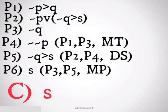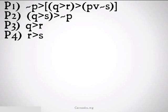Finally, we're going to take a look at this last problem, which was a little bit tougher. We had not p implies q implies r implies p or not s. Premise 2, we had q implies s implies not p. Premise 3 was q implies r and premise 4 was r implies s. The conclusion we're trying to reach is not r. Wow, that looks pretty tough. But I bet we can do it. If you want to try it on your own, pause the video now. If not, let's go.